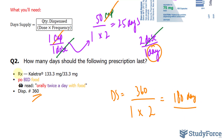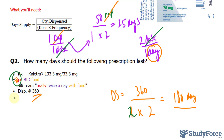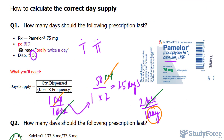Now just to put this in perspective, if we had the two T's with the two dots, then our dosage would be two. 360 divided by four would give us 90 days. So you have to make sure that you read this and understand what they're telling you. And there you have it — two more examples on how to calculate the correct day supply.